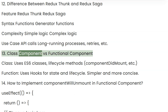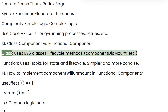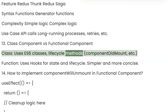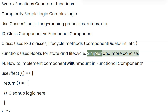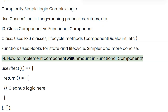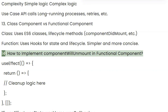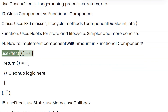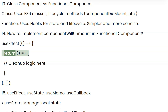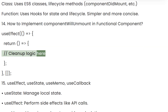Question 13: Class component versus functional component. Class components use ES6 classes and lifecycle methods. Functional components use hooks for state and lifecycle — simpler and more concise. Question 14: How to implement componentWillUnmount in a functional component: useEffect(() => { return () => { /* clean up logic here */ }; });